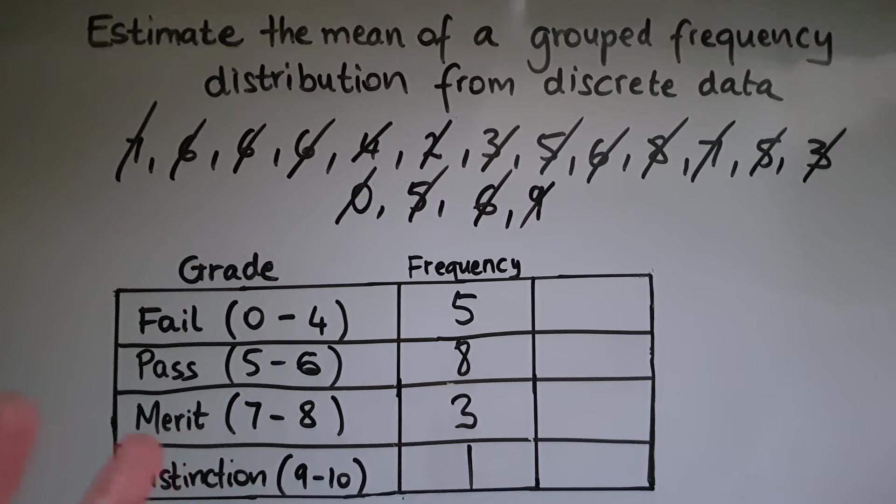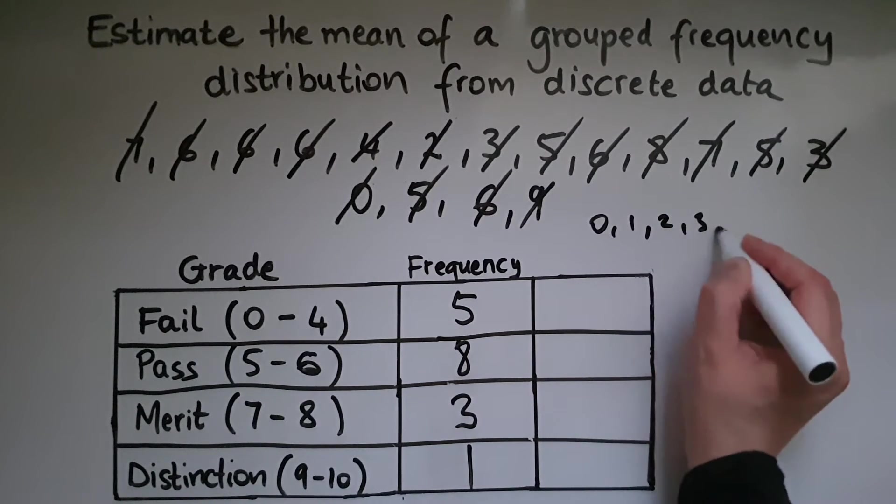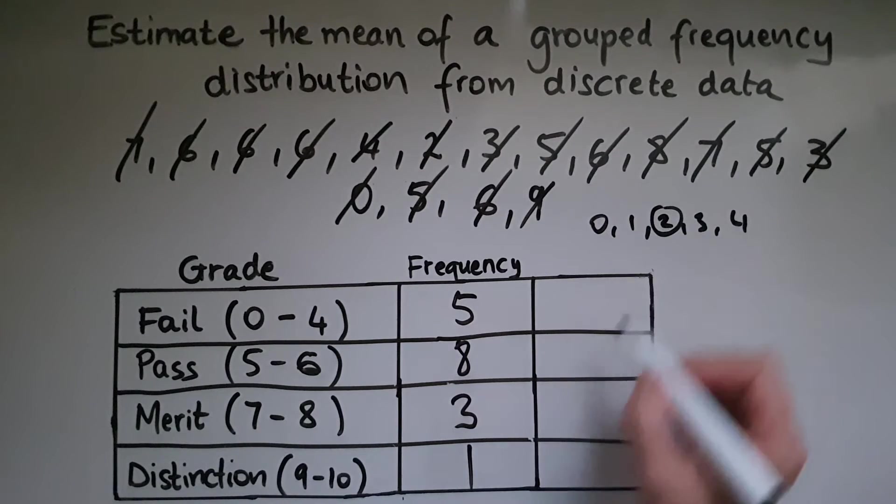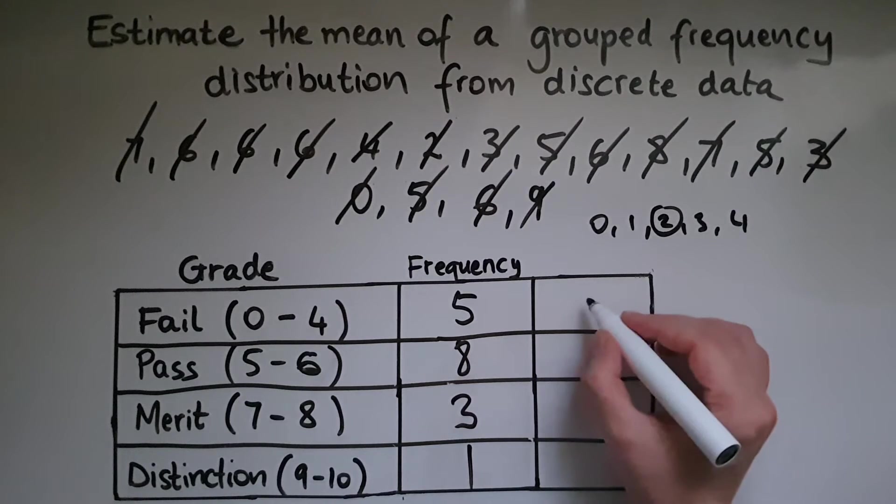But we're going to find the mid value. So as I said, it's 0, 1, 2, 3, and 4, all included. So in the middle is the 2. So we're going to find that mid value or midpoint.